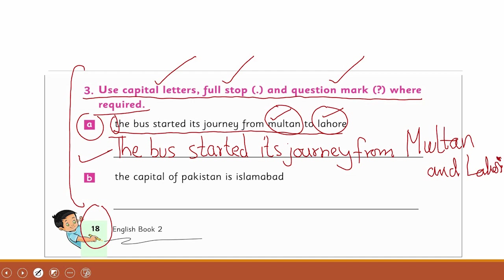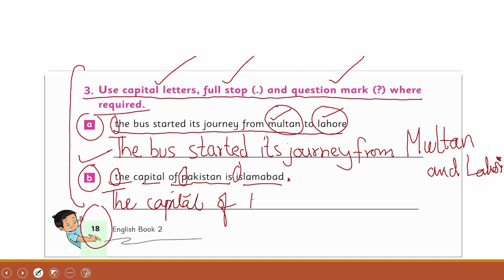Number two: 'the capital of Pakistan is Islamabad.' The T should be capital, the C should be capital, the P should be capital, and there must be a full stop because the sentence finishes there. So you will rewrite it: 'The Capital of Pakistan is Islamabad.' with a full stop at the end.